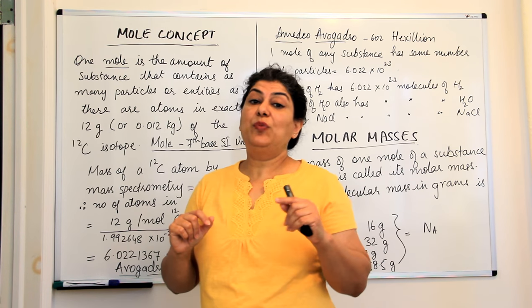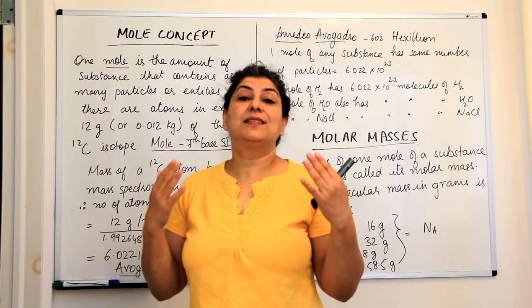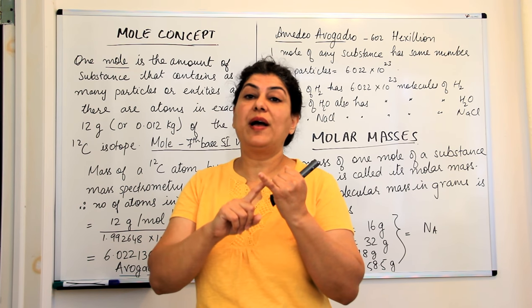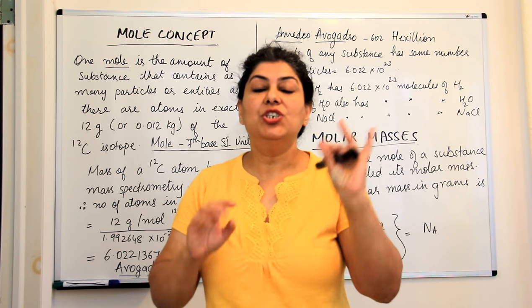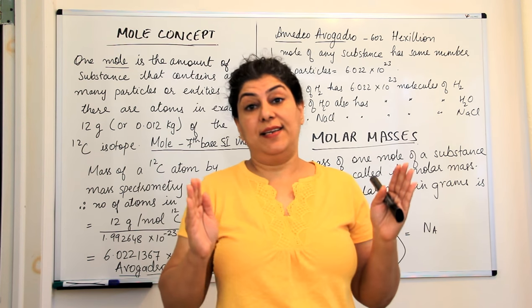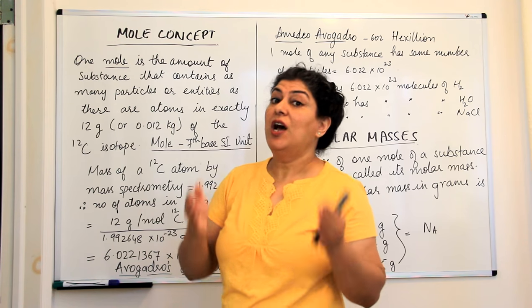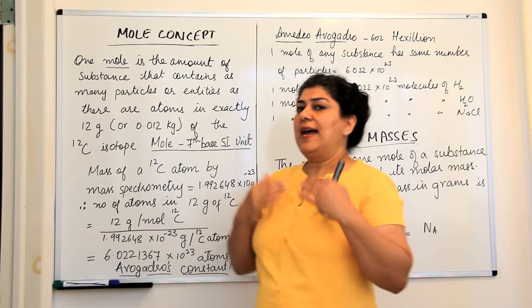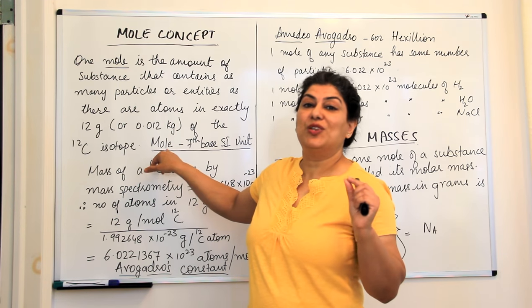Now just imagine that like we have the seven wonders of the world, in science we have the seven base units. What are the base units? Meter, kilogram, second, ampere, kelvin, candela and the seventh one is mole. Just like the wonders of the world, these are seven units which are the most important in science and mole found a place in the seven base units. So you can imagine how important the mole or the mole concept was. As we study about the mole concept and we go further using it, you will understand how important this quantity was.